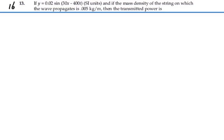Here's problem 16, 13. If y is equal to 0.02 sine 30x minus 400t SI units, if the mass density of the string on which the wave propagates is 0.005 kilograms per meter, then the transmitted power is